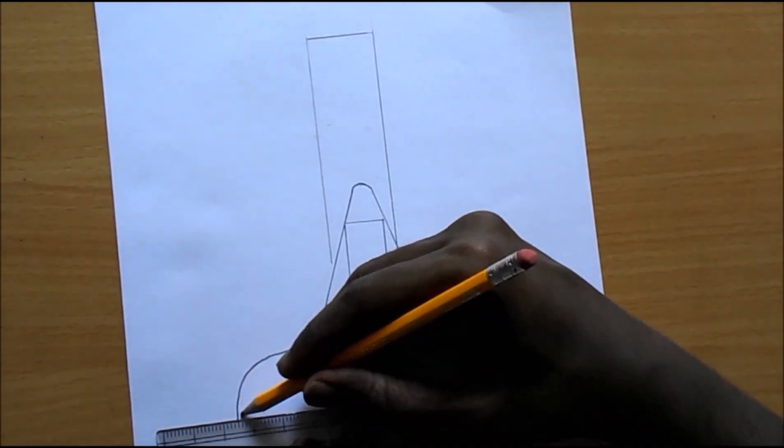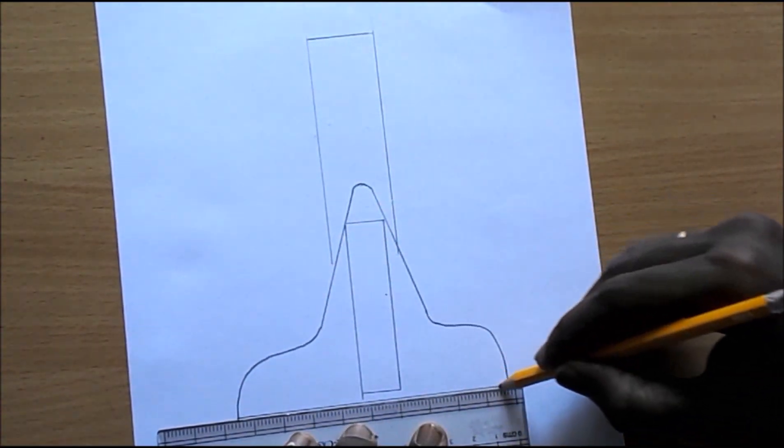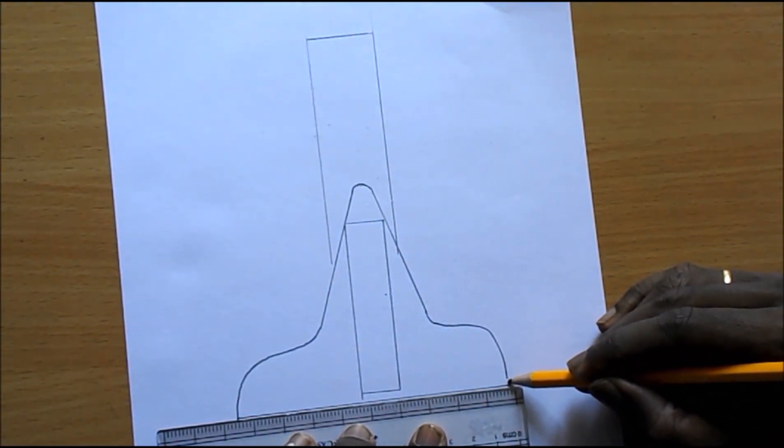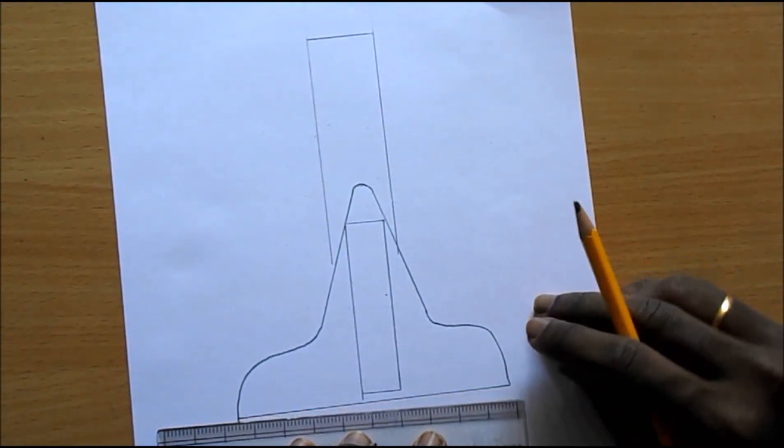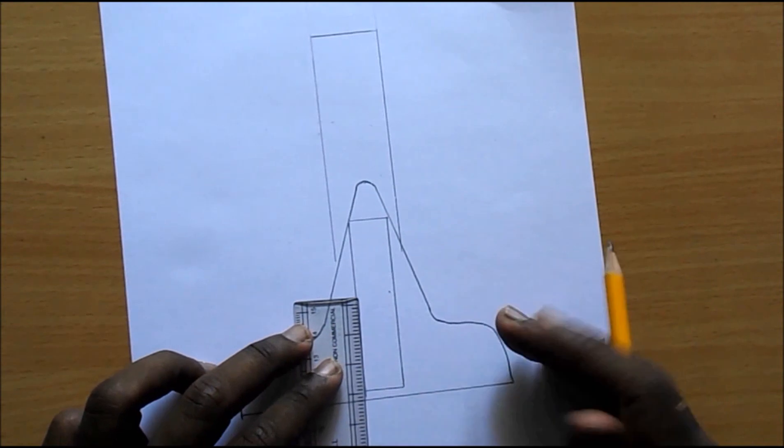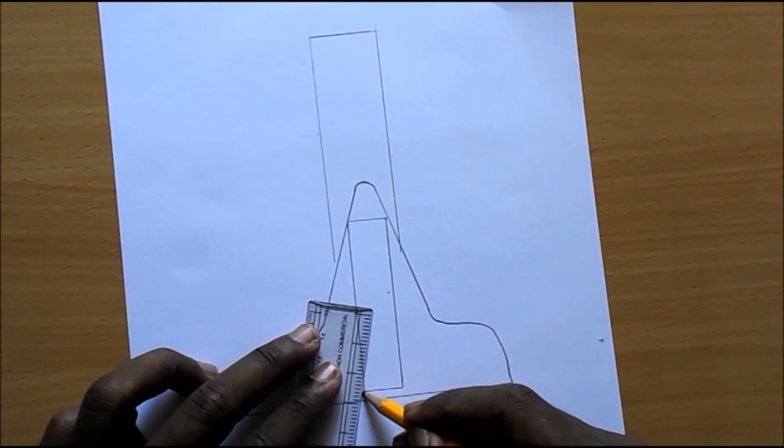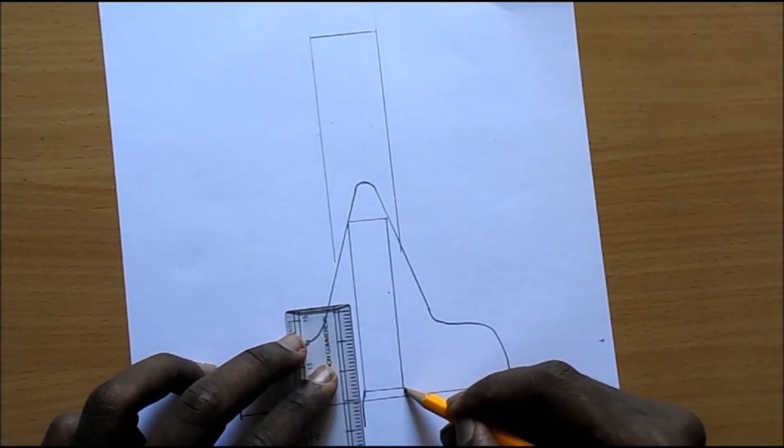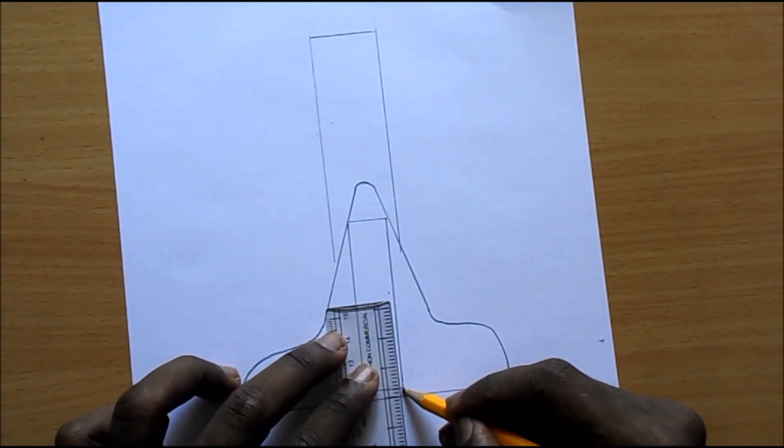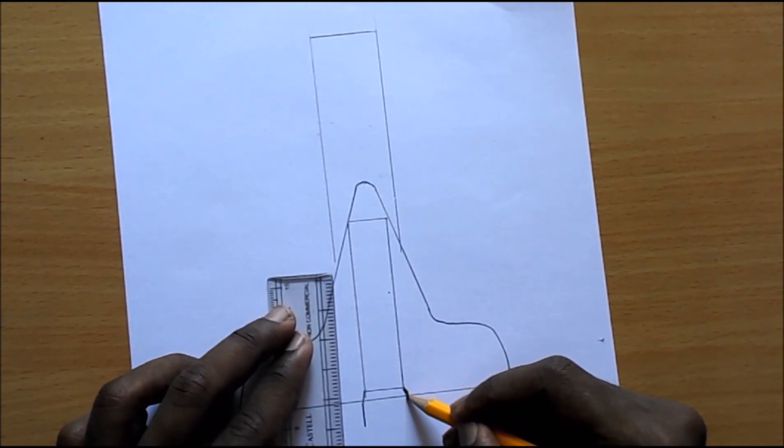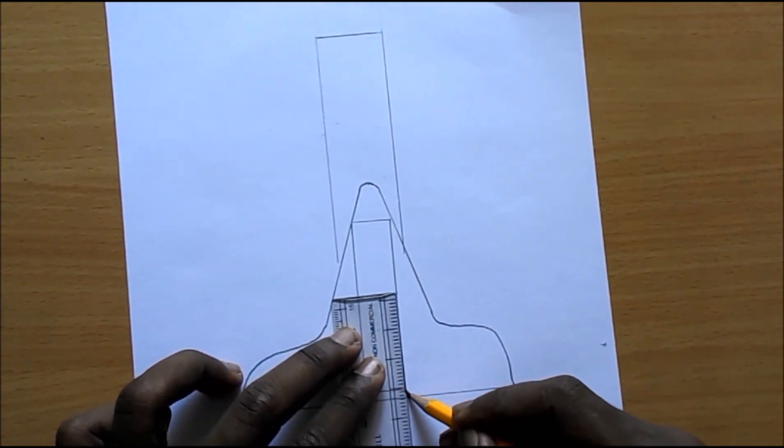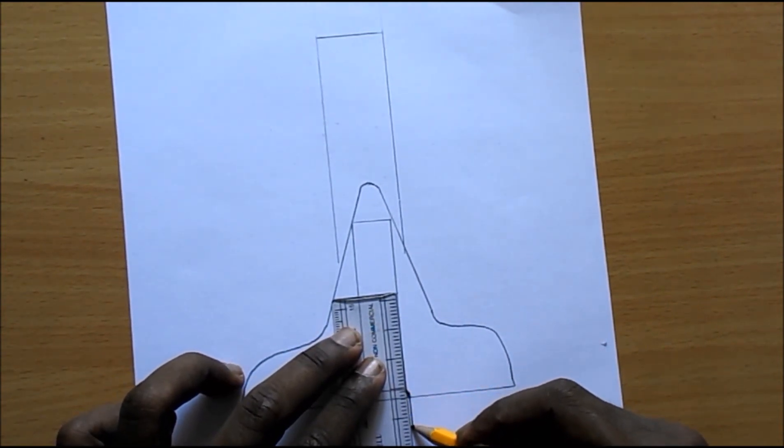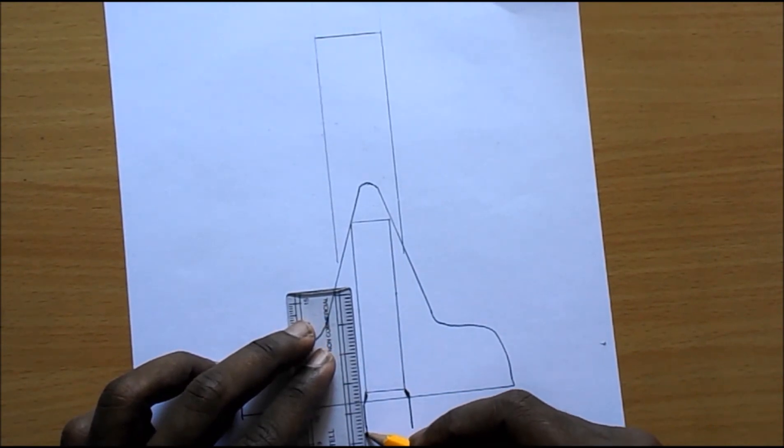Then with the help of the scale, join the two positions. Just darken some of the parts in the rocket so it gives a 3D effect.